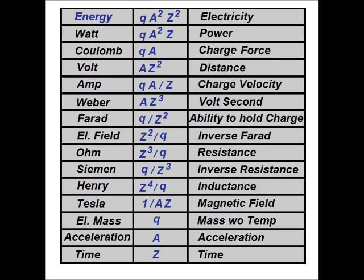And now from the one true electrical energy equation, E equals qa squared z squared, and all its variations, we get each and every electrical unit: watt, coulomb, volt, amp, weber, farad, electrical field, ohm, siemen, henry, tesla, electrical mass, acceleration, and time.